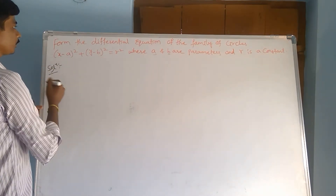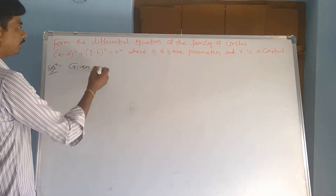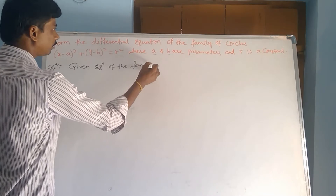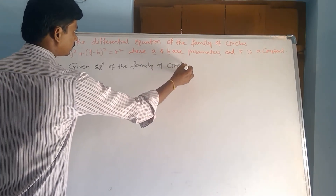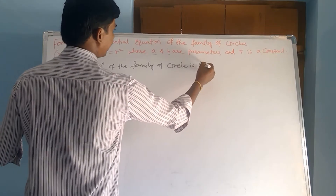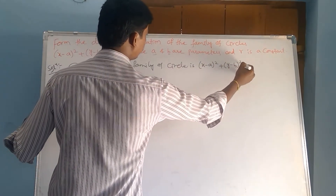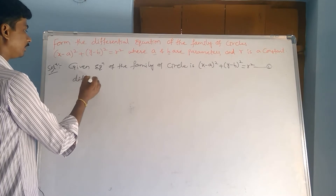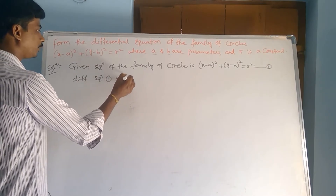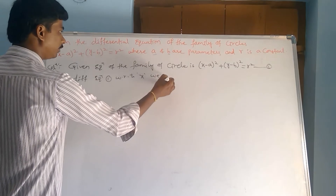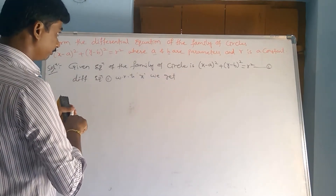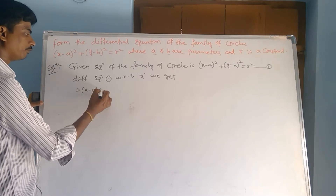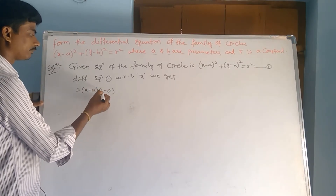Solution. Given equation of the family of circles: (x minus a) squared plus (y minus b) squared equals r squared — equation number 1. Now differentiating equation 1 with respect to x, we get: 2 into (x minus a), inner derivative 1 minus 0, dy/dx into x equals 1.